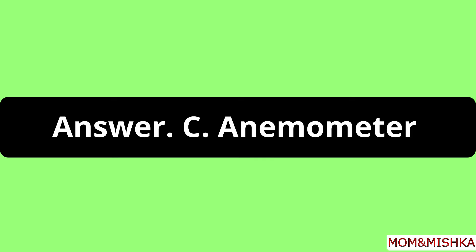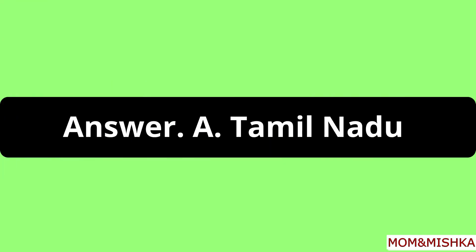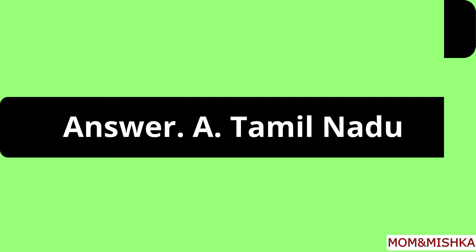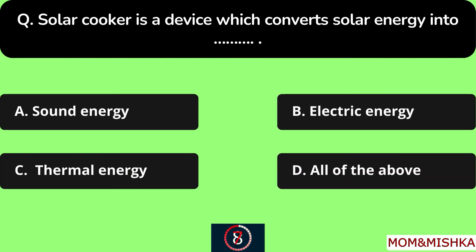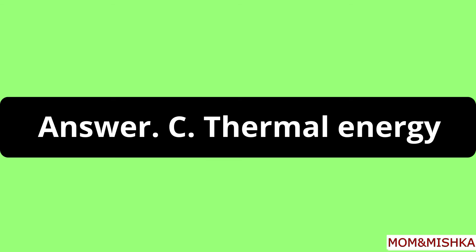It's known as an anemometer, option C. Where is the largest wind farm located in India? In Tamil Nadu, option A. A solar cooker is a device which converts solar energy into thermal energy, option C.